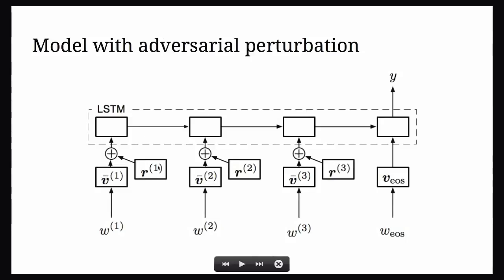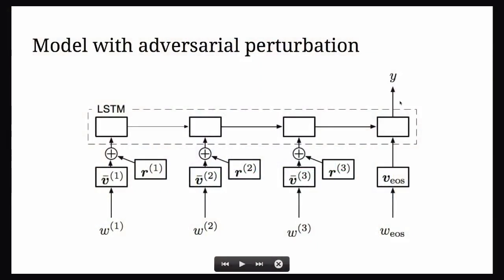The modification to the model is the R's we add to the embeddings. In the case of adversarial training, these R's are continuous vector perturbations on the embedding space, derived from taking the gradient of the loss with respect to the input embedding to create misclassification. In the case of virtual adversarial training, we don't know the true label Y, so we want an adversary that changes the distribution over labels.